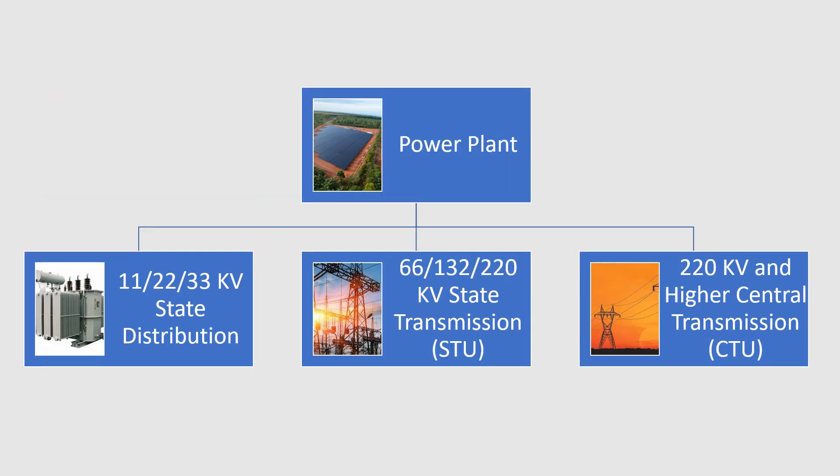If the power plant is connected to the nearest grid, that connection can be of three types. First, if the power plant is small — say one, two, five, or ten megawatts — then generally these power plants are connected to the state distribution substation grid, and the voltage level is in the range of 11 kV, 22 kV, or 33 kV.